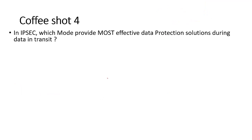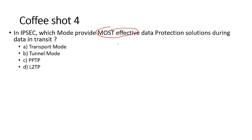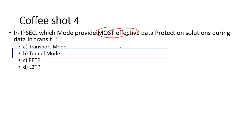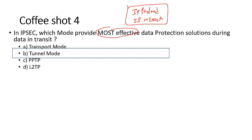Next coffee shot: In IPSec, which mode provides the most effective data protection during data in transit? The keyword is 'most effective.' Options include transport mode, tunnel mode, PPTP, and L2TP. PPTP and L2TP are VPN protocols, so we're left with transport mode and tunnel mode. The answer is tunnel mode because in tunnel mode both the IP payload and IP header are protected — this is called link encryption. Tunnel mode is the most secure because both payload and header are protected with the help of ESP, creating a new packet and header.